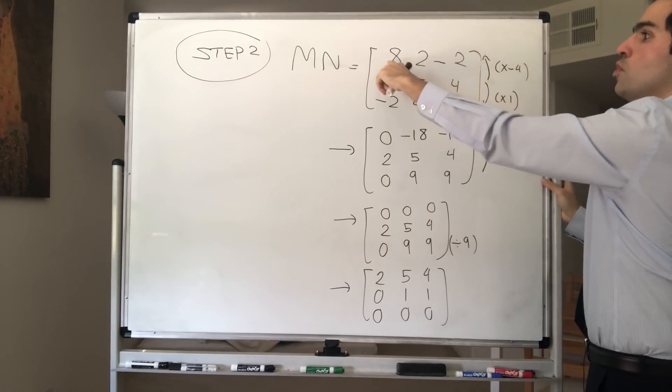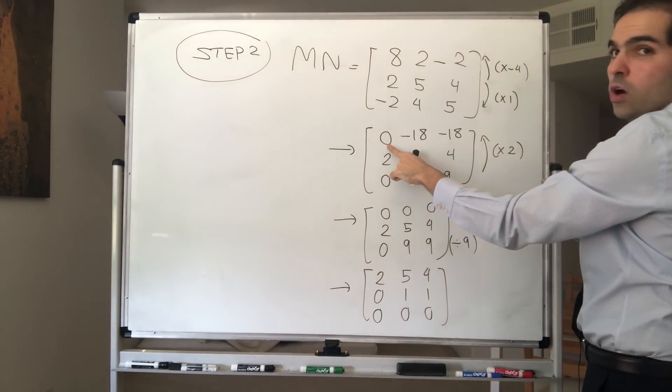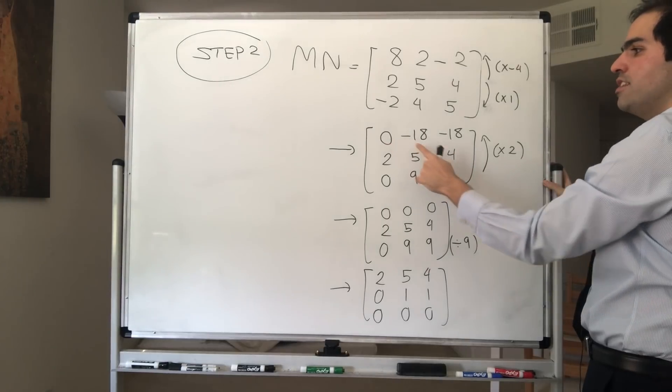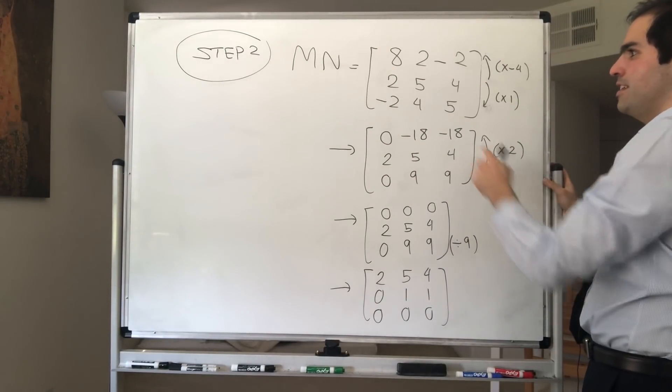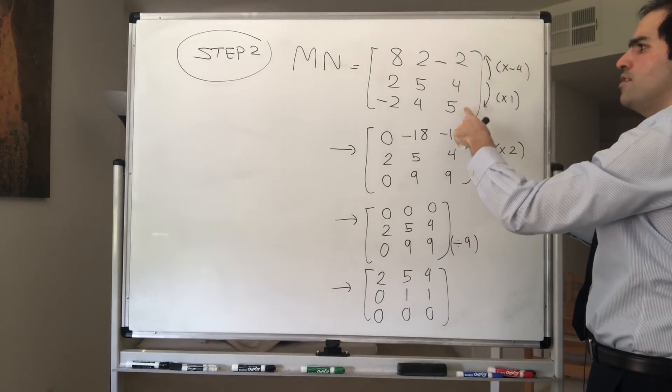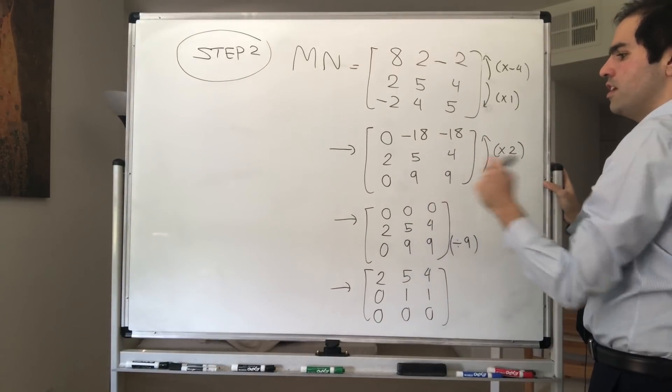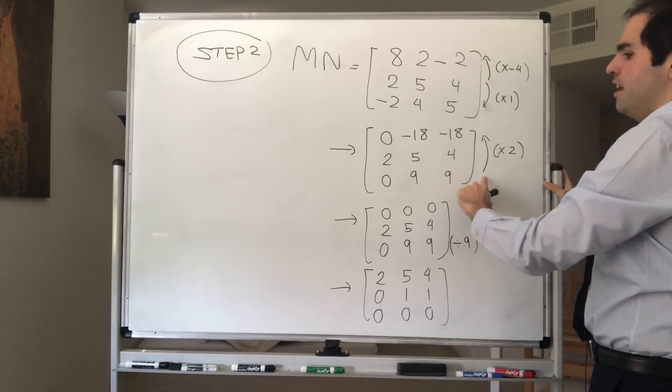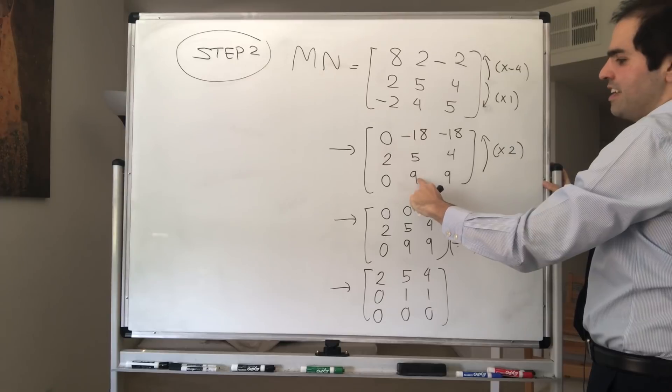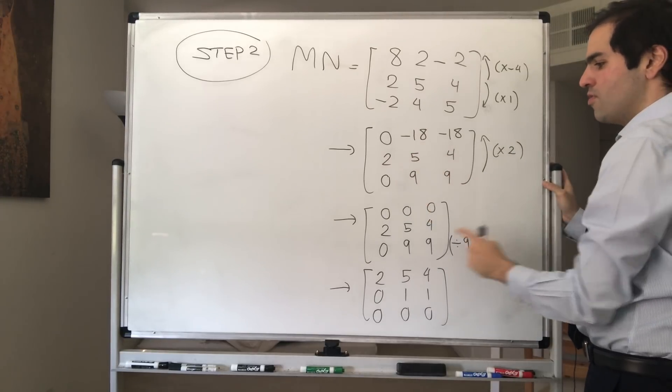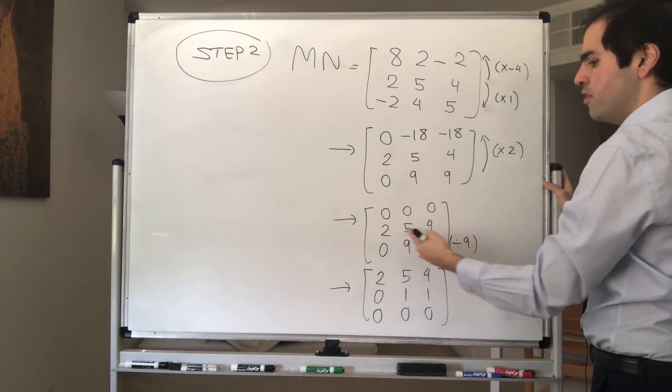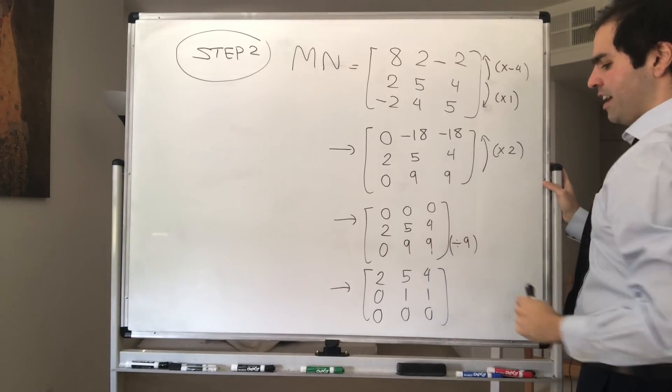Then you subtract 4 times the second row from the first row to get a 0. So you get 0 -18 -18. And here, you add the second row to the third row to get 0, 9, 9. And then to cancel it with this 18, you add 2 times the third row to get 0, 0, 0, 2, 5, 4, 0, 9, 9.